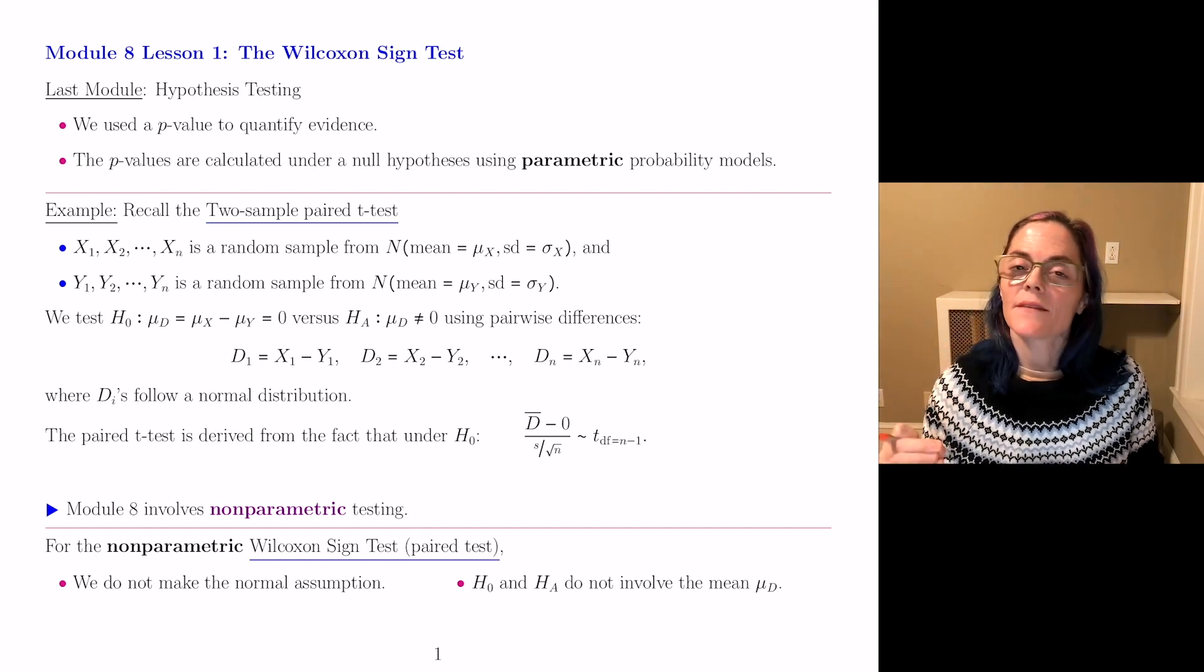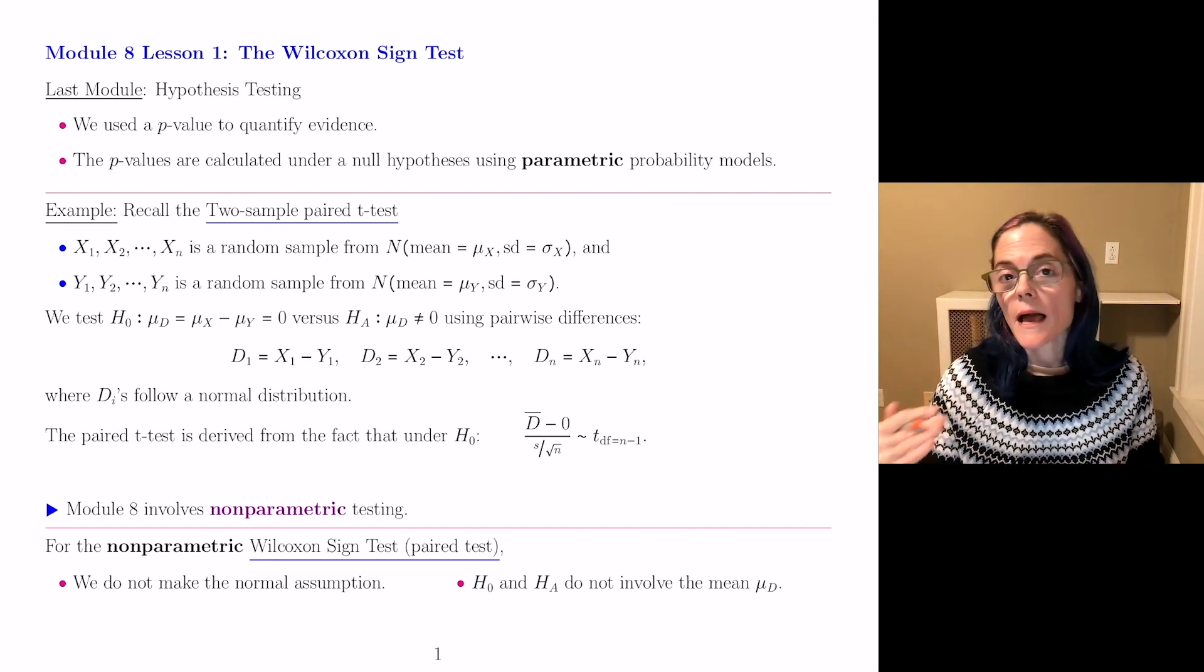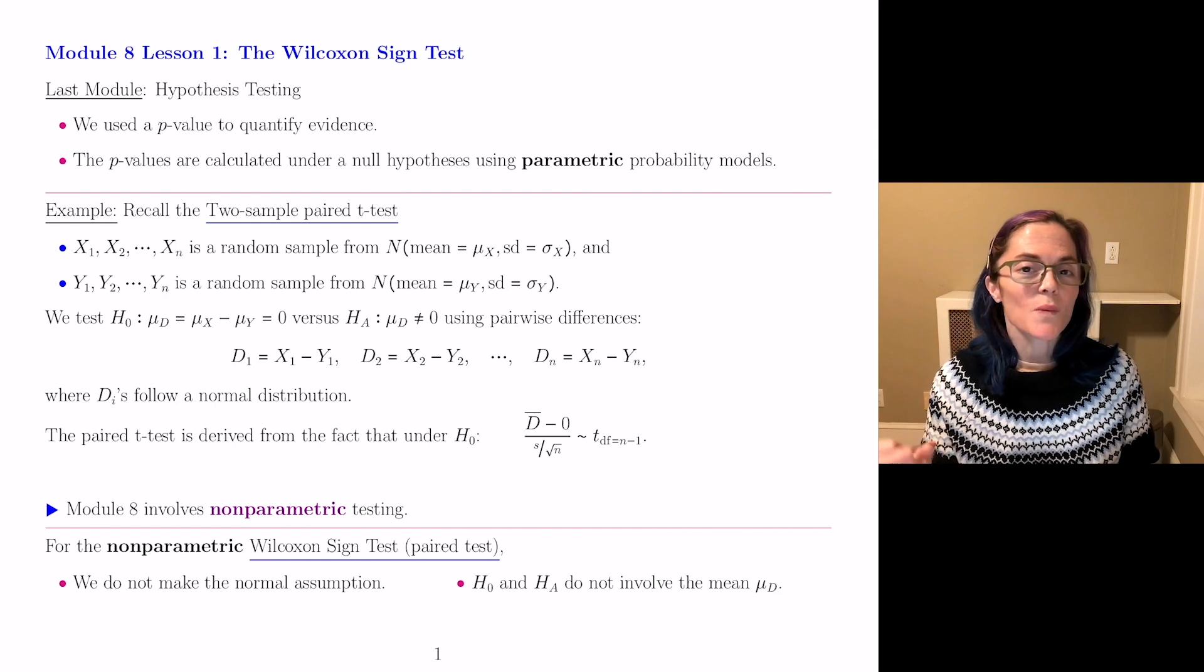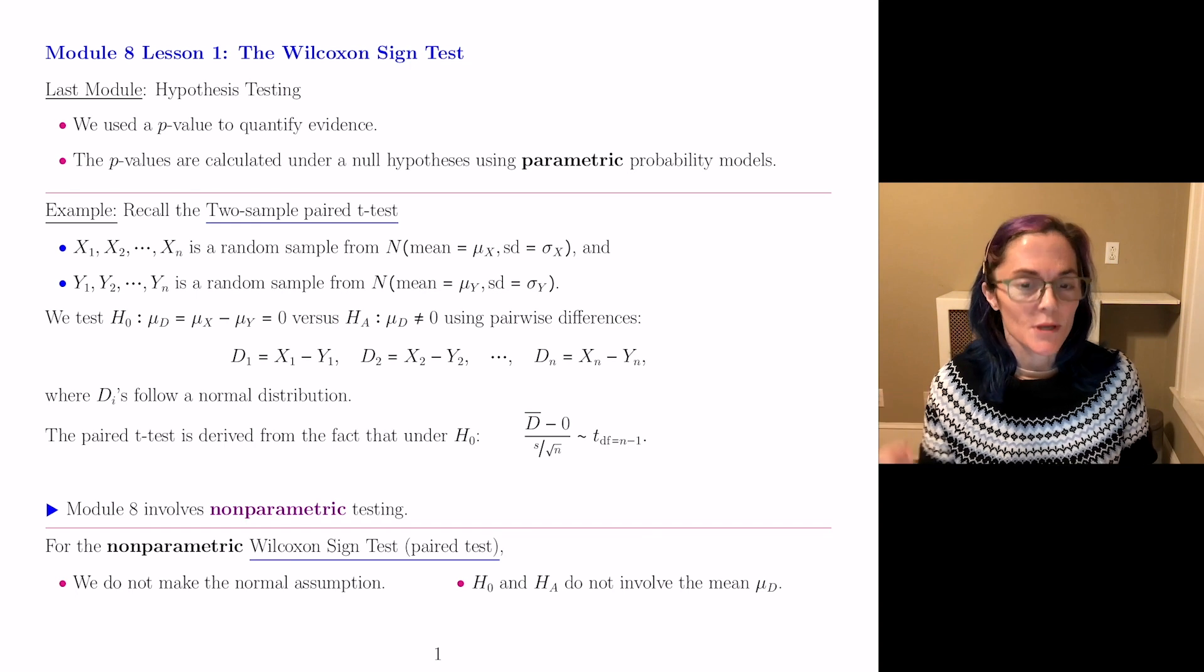In Module 7, we learned hypothesis testing. We calculated p-values under a null hypothesis. Quite often, we had some very strong assumptions about having a random sample from a normal distribution.